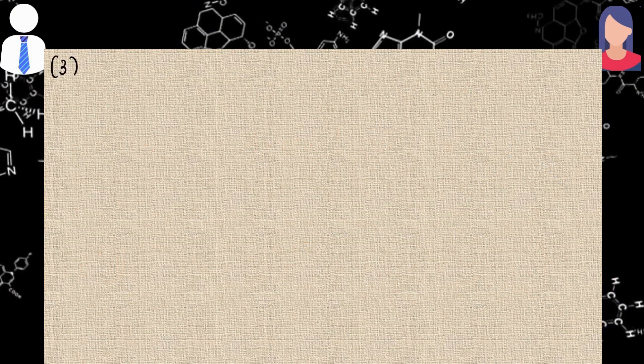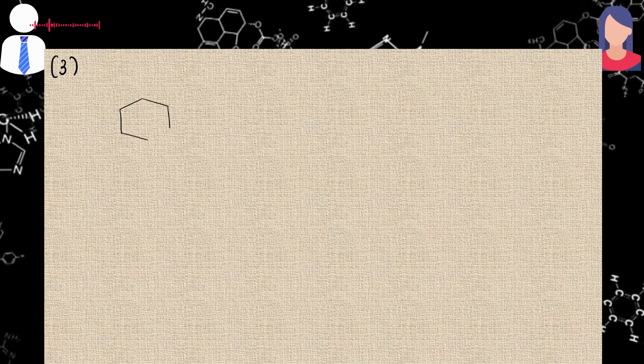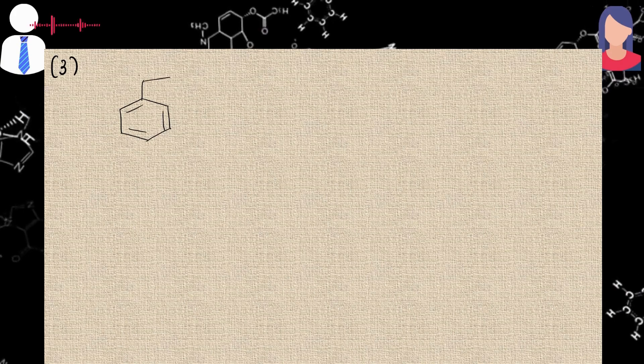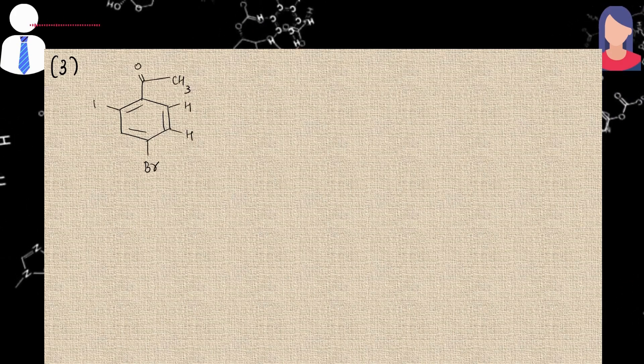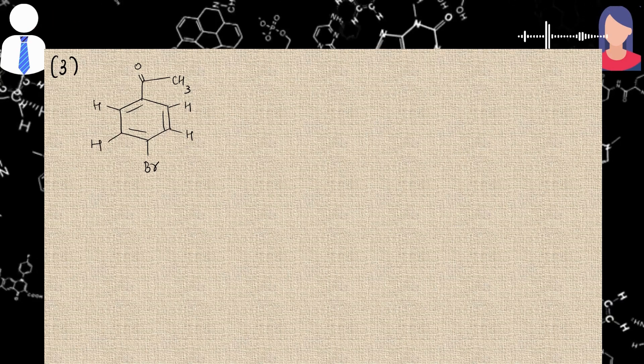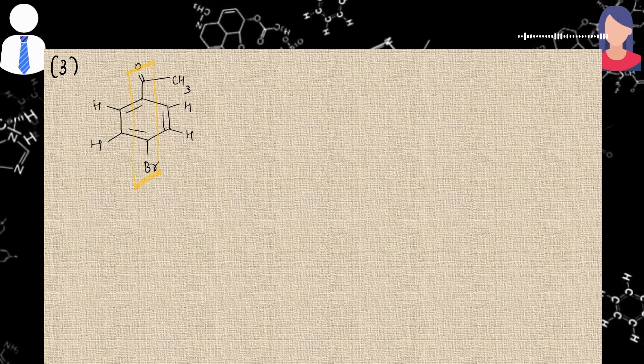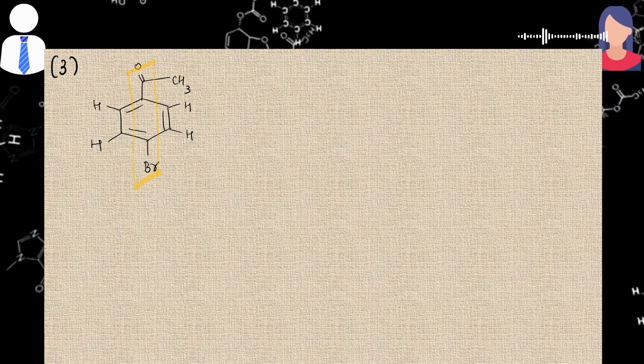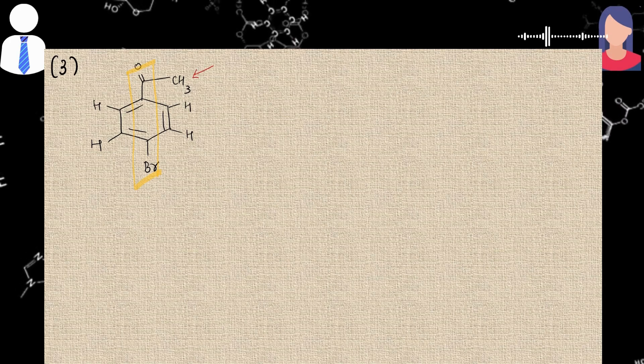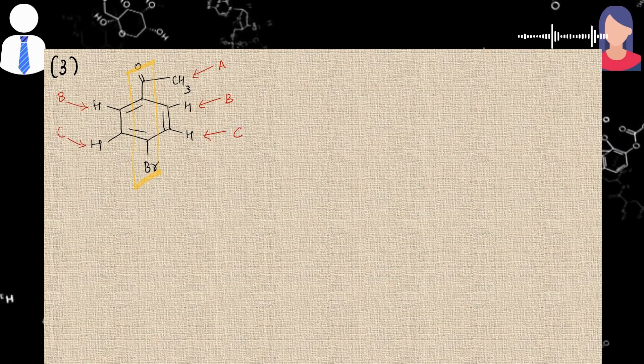Then the third professor started asking me questions. He said draw the structure of 4-bromoacetophenone. Then he asked that tell me about its proton NMR spectra, like how many different types of protons are present, and tell me about its total number of signals in the proton NMR spectroscopy. I answered that this compound has a plane of symmetry, so there are total three types of protons present in the compound, and the same number of signals will appear in the NMR spectra. First type of proton is the one from the acetyl group. Second type of proton is at ortho position to the acetyl group. And third one is at meta position to the acetyl group.